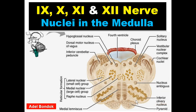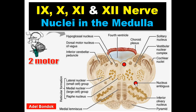The last four cranial nerves — glossopharyngeal, vagus, accessory, and hypoglossal — arise from the medulla, so their nuclei are present in the medulla. We have eight cranial nerve nuclei in the medulla. Two motor nuclei: the hypoglossal nucleus and nucleus ambiguus. The hypoglossal nucleus is for the hypoglossal nerve; nucleus ambiguus is for the glossopharyngeal, vagus, and cranial accessory. We also have two parasympathetic nuclei.